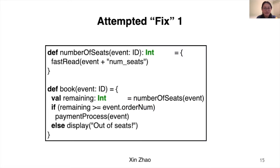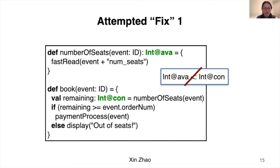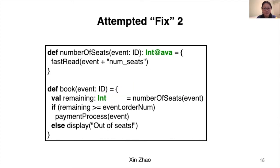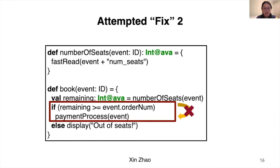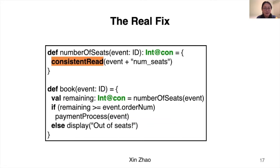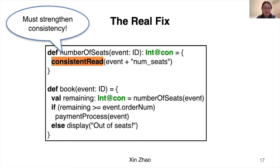Looking back at the ticket booking example: the number_of_seats function should return an available value, so we label it available. The remaining value should be consistent, so we label it consistent. Since the available label should not be lower than consistent, the information flow type system will not allow this assignment. If the label of remaining is changed to available, the indirect flow is also detected. As a real fix, we need to re-implement number_of_seats using a consistent read, so its return value can be labeled as consistent.